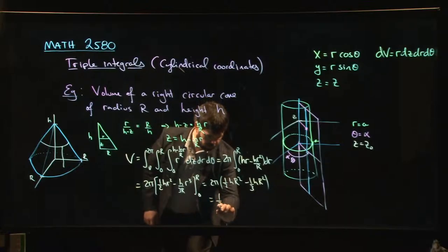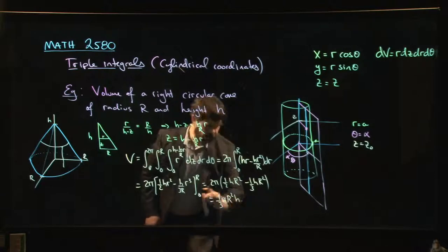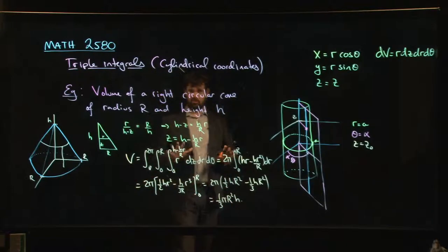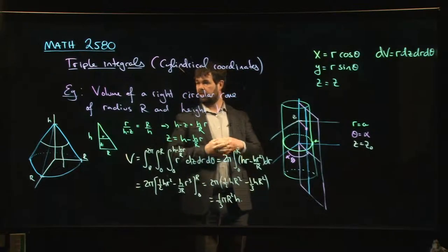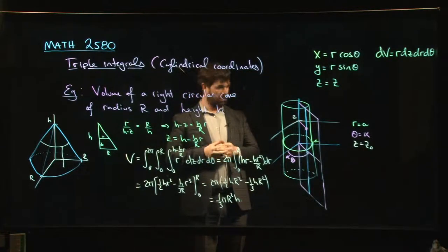So I get one third π R squared H, which should look familiar as the formula giving the volume of a right circular cone of radius R and height H.